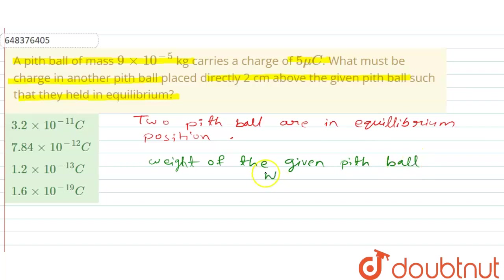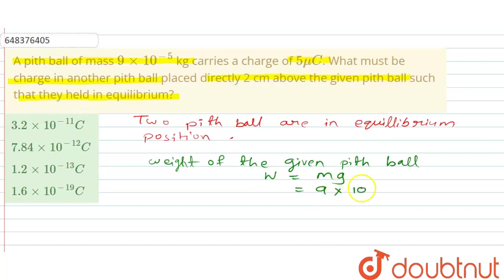W is equal to m into g, where m is the mass of the ball and g is the acceleration due to gravity. So m is 9×10⁻⁵ kg and g is 9.8 m/s².